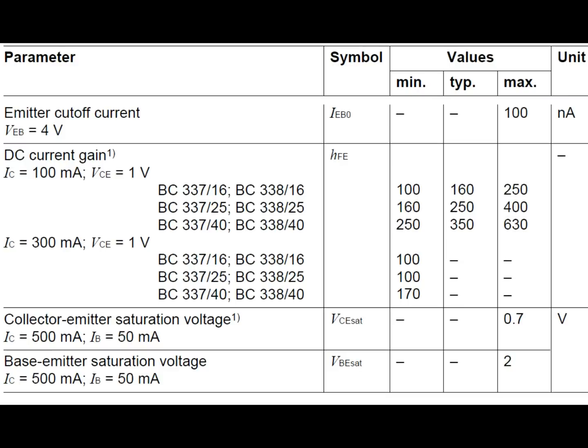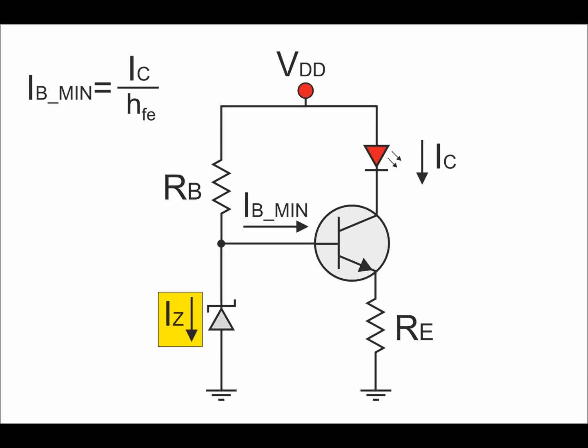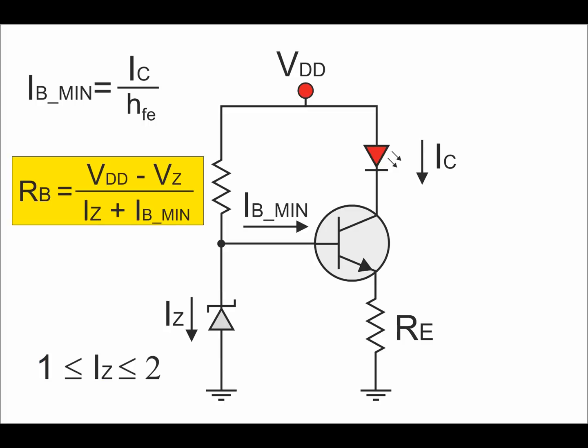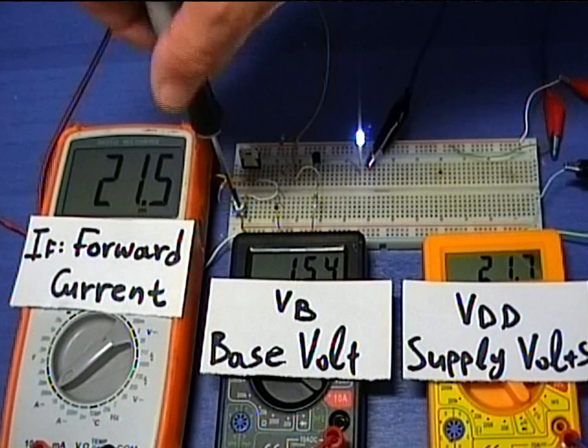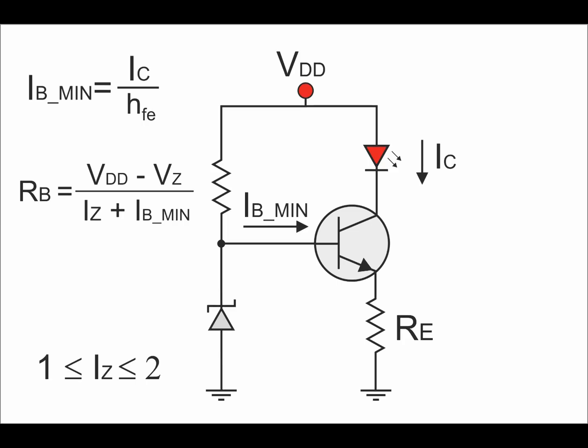Use the worst case scenario value for HFE, which is the minimum value provided by the manufacturer. As for the Zener diode current, we will use the minimum current required from the diode to regulate the voltage. 1 to 2 mA current is enough. Now we can apply Ohm's law to determine the base resistor. Do not forget to subtract the Zener voltage from the supply voltage, since no current flows within the Zener below this point. As for the supply voltage, you need to use the worst case scenario, which is the minimum voltage possible. If you do not know this voltage, then use 1.5 volts higher value than the Zener voltage.